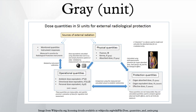The CIPM says that in order to avoid any risk of confusion between the absorbed dose D and the dose equivalent H, the special names for the respective units should be used — that is, the name gray should be used instead of joules per kilogram for the unit of absorbed dose D, and the name sievert instead of joules per kilogram for the unit of dose equivalent H.